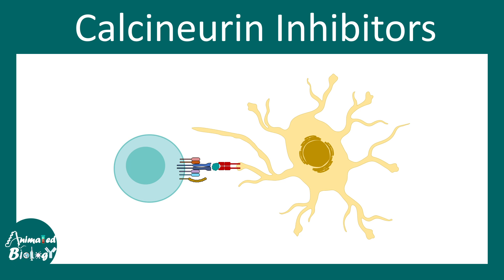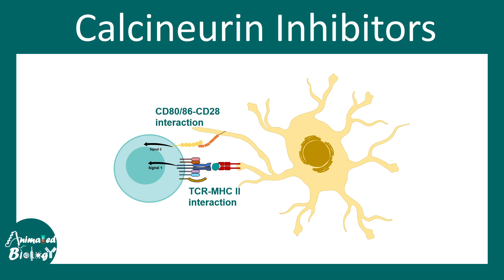To understand calcineurin inhibitors' mode of action, we need to understand how T cell activation works. T cell activation is the key biological process targeted by this drug. A T cell is activated when an MHC class II molecule-bound peptide is presented to a naive T cell by an antigen presenting cell — in this case a dendritic cell. Signal 1 is the TCR and MHC II interaction; Signal 2 is the CD28 and CD80/86 interaction; Signal 3 is an autocrine signal where the T cell secretes IL-2, which acts via the IL-2 receptor to give the T cell proliferative capacity.